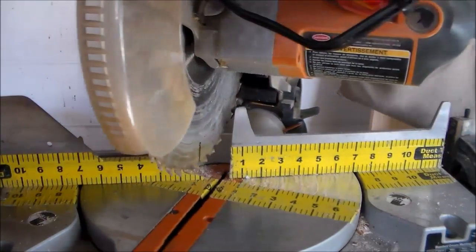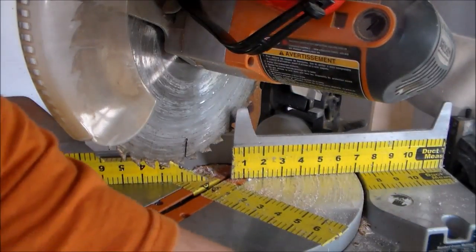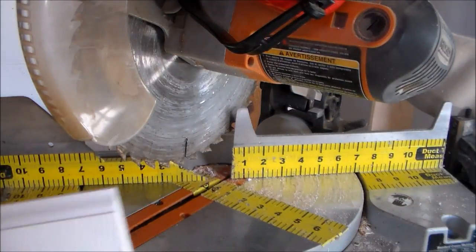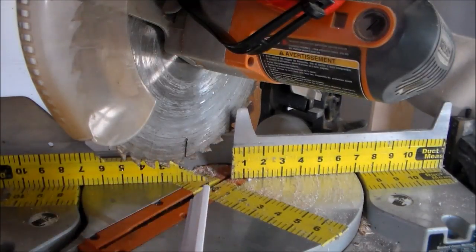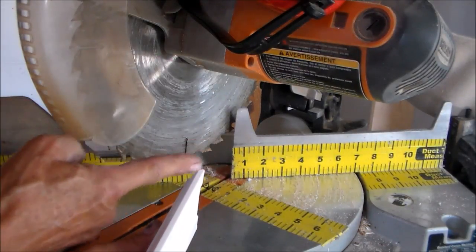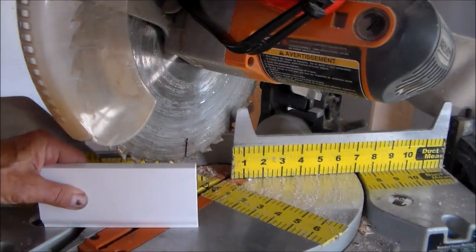Then we want to set the saw at a 45 degree angle. We have our test piece. This is the cut that we need, 45 degrees in this direction. So to do that, I'm going to have to cut this upside down.